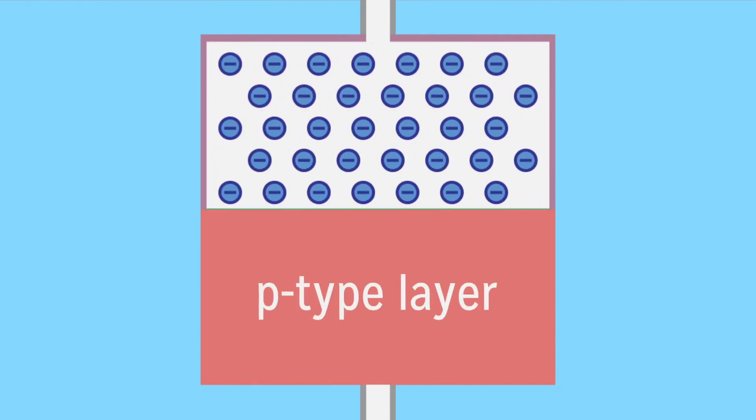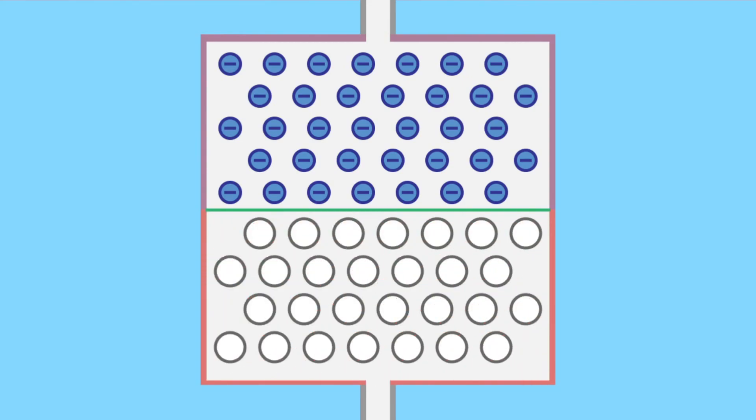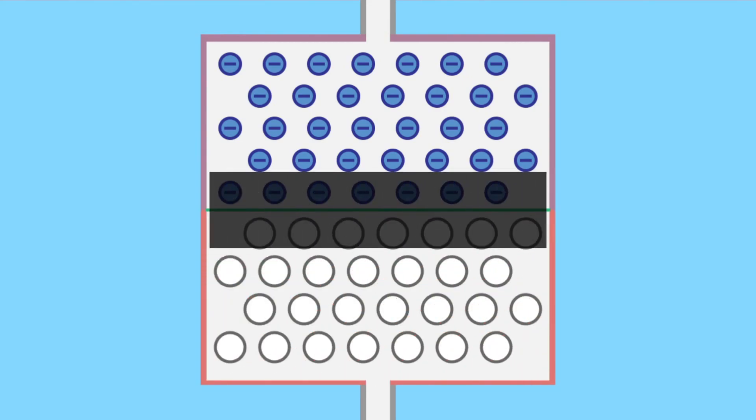LEDs are essentially composed of two parts, the n-type layer and the p-type layer. The n-type layer is the higher energy layer with the surplus of electrons, while the p-type layer is the lower energy layer that has an abundance of empty spaces we call holes.